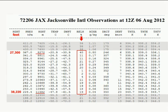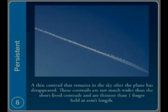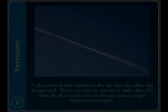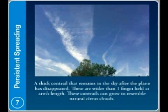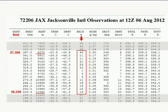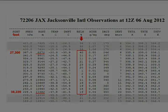But regardless of low humidity, some people in Jacksonville reported a sky full of persistent contrails anyhow. The appearance of persistent contrails in conditions of very low relative humidity can only mean one thing: that the persistent contrails are not water vapor.